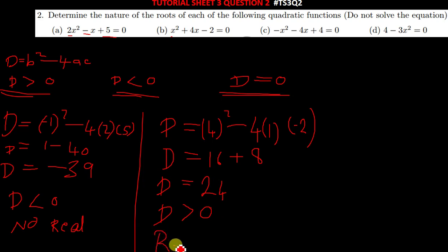If D is equal to 24, it simply tells us that D is positive. When D is positive, it means that it's greater than 0. Then when D is greater than 0, it means that it has real roots or two distinct real roots.